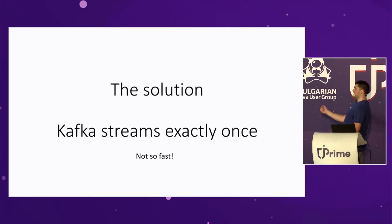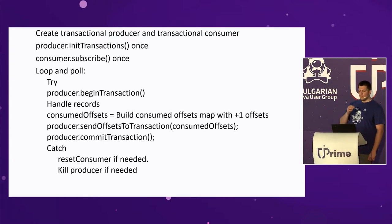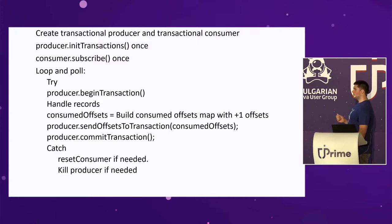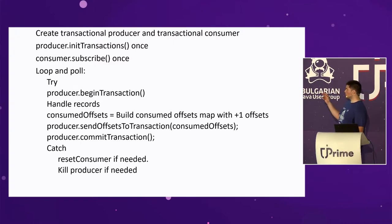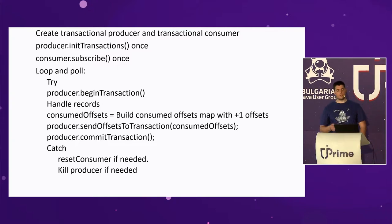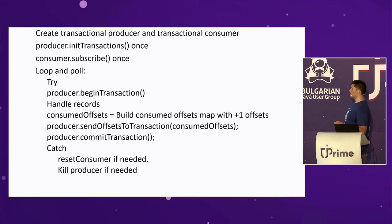The solution is exactly once with Kafka Streams — but not so fast. Let's look at a guideline for implementing consume-transform-produce properly. First we need to initTransactions once. Then we loop and poll, begin a transaction every time, handling any errors. When we are done processing the consumed records, we commit the offsets and commit the transaction. We have to handle transactional state errors, timeout errors — we have to catch all of that. And that's the good thing about Kafka Streams: it does it all for you.